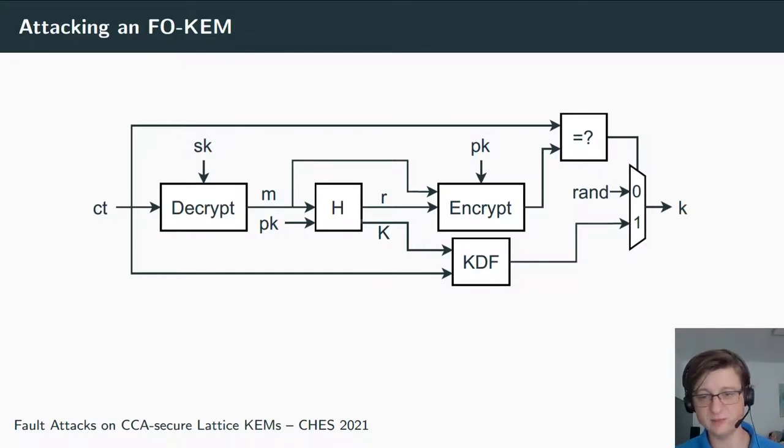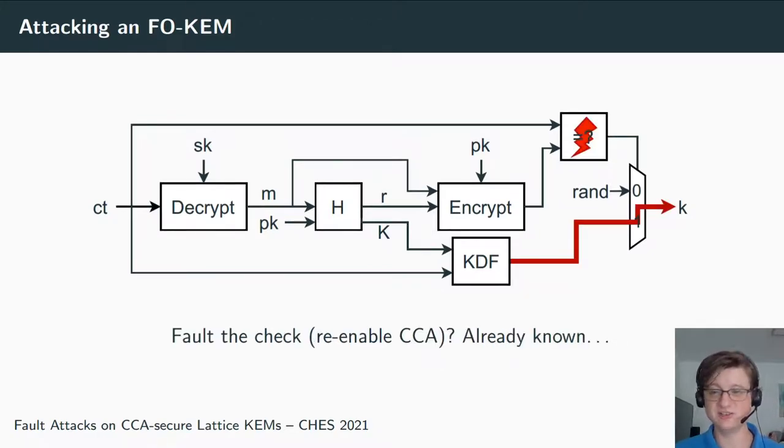This scheme, or a variant of this scheme, can then be plugged into this FO transform to get a chosen-ciphertext-secure key encapsulation mechanism, where again there is the question: where can we now inject a fault so that we can actually attack this? Some people have already suggested to attack this final equality check—to check if two ciphertexts are identical—to fault it in such a way that you always get one path of this multiplexer. This would then re-enable chosen-ciphertext attacks. But again, this is already known, and also this comparison is often quite a small part of the runtime, so you can throw lots of countermeasures at it and it won't make a lot of a dent.